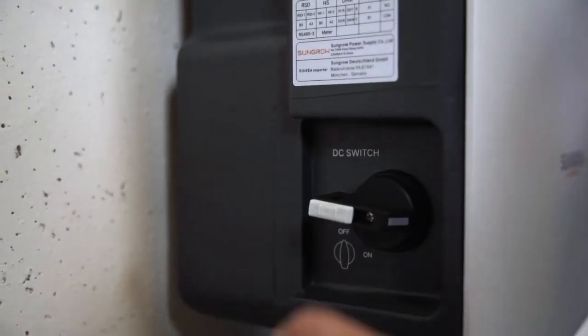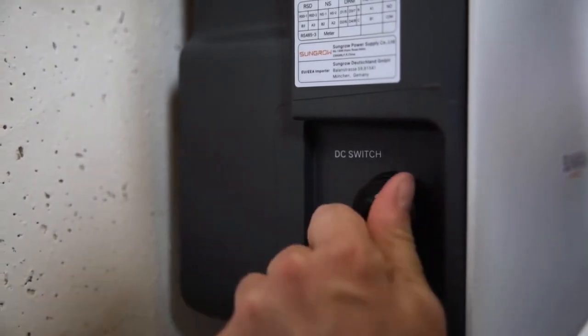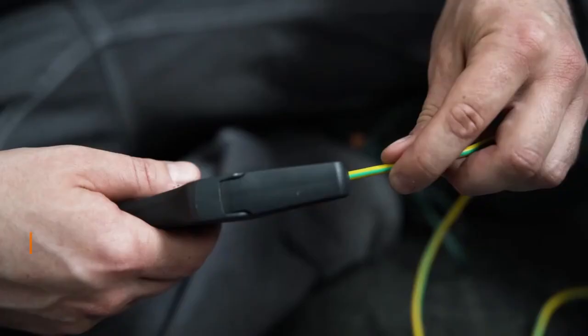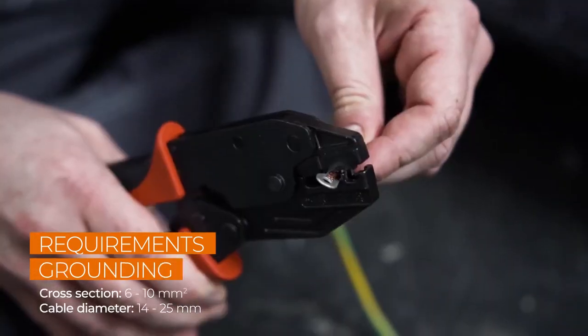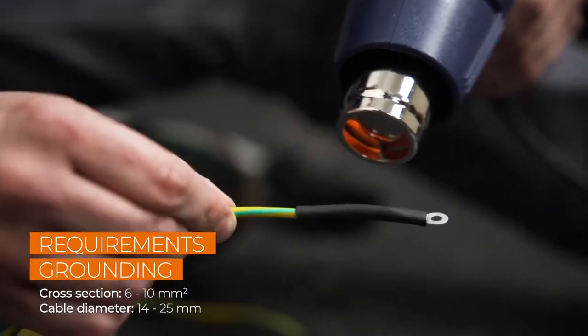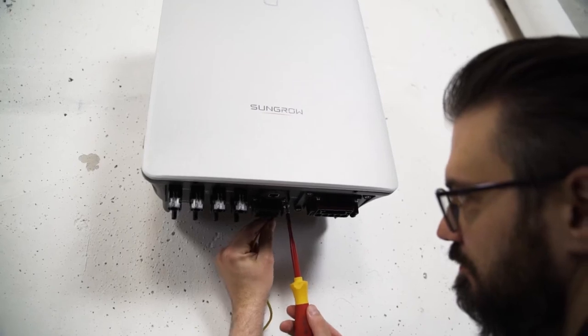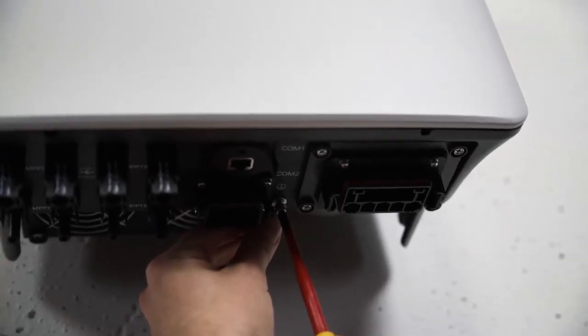Furthermore, you have to set the DC switch on the left side of the inverter from ON to OFF. Now let's connect the inverter to ground. There is a grounding terminal at the bottom of the inverter. Connect it to the general grounding of the house.